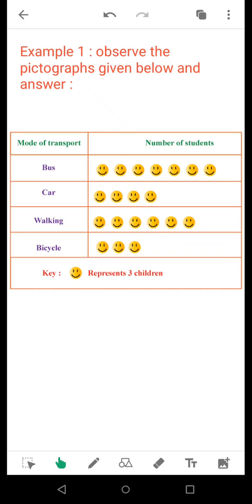There are four modes of transport given: bus, car, walking, bicycle. Beside bus there are seven smileys, beside car there are four smileys, beside walking there are six smileys and beside bicycle there are three smileys. The key of this pictograph shows that one smiley represents three children.